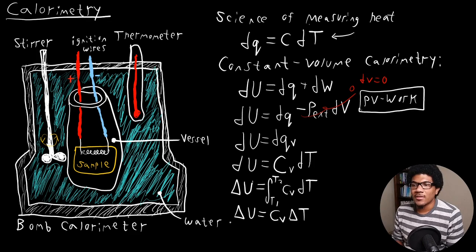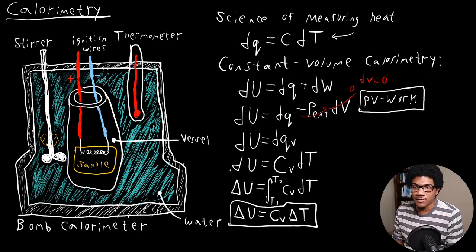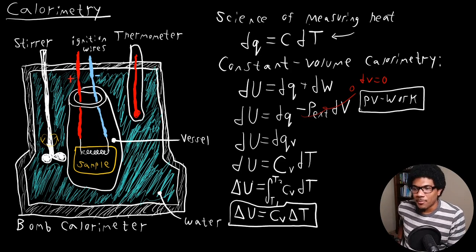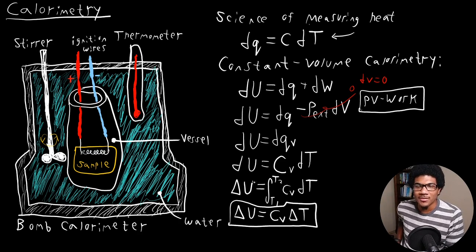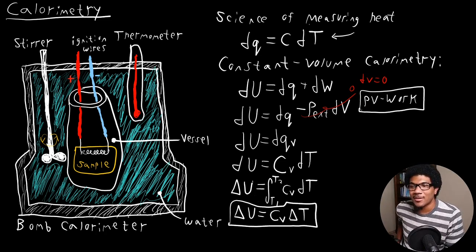So when doing constant volume calorimetry, if we can measure a simple temperature change for our sample, we end up getting the change in internal energy as well: ΔU = Cv·ΔT. This is just one example of how heat is very important in solving for internal properties of our systems in thermodynamics. We'll go into more detail about the concept of heat capacity in the next video.